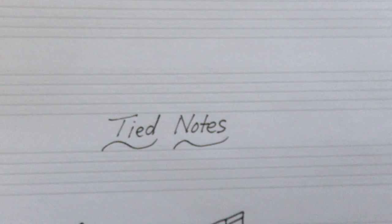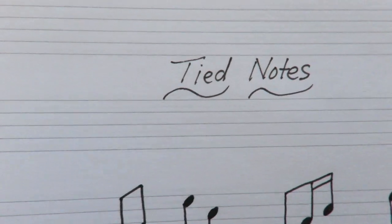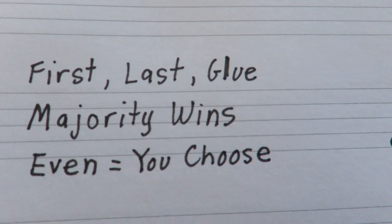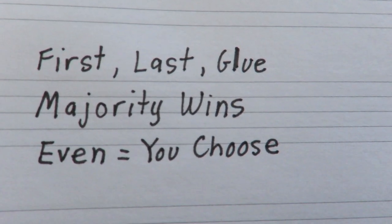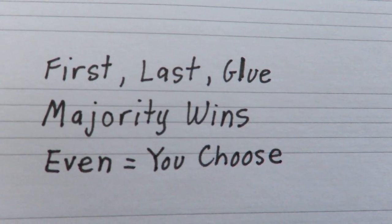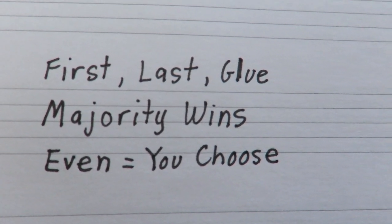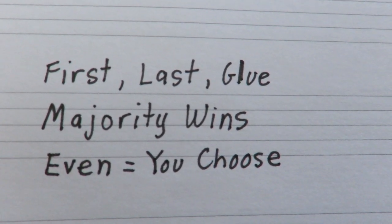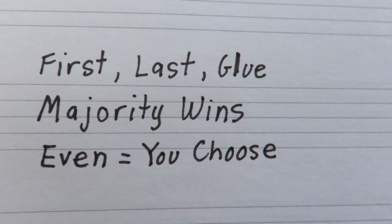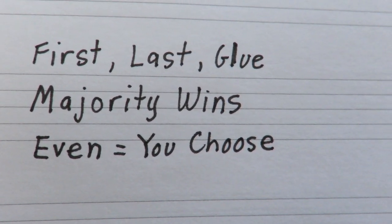Now this week we learned how to put the stems on tied notes and we had to write down these rules. If you need to pause at any time so that you can copy things then do so. Just click the pause or if you click in your screen you should see a pause button come and then you can come back and click it again and it'll start to play. The three rules are first, last, glue, majority wins, and even equals you choose.